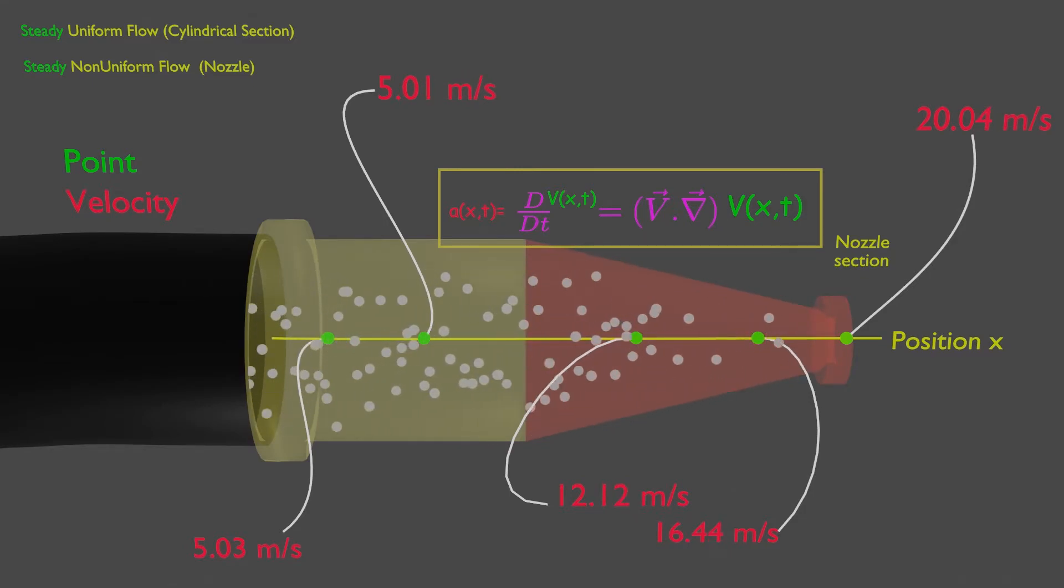So even though flow is steady, there exists acceleration. So never imagine the nozzle has zero acceleration if it has steady flow.